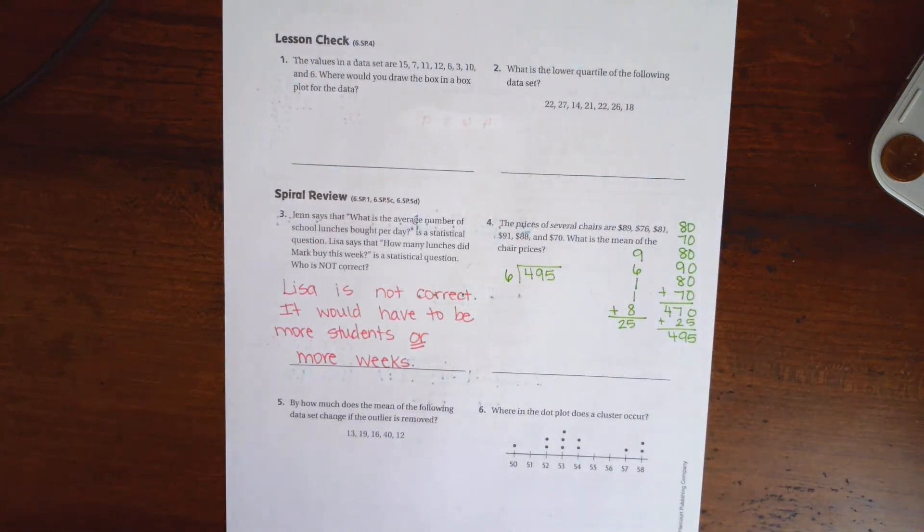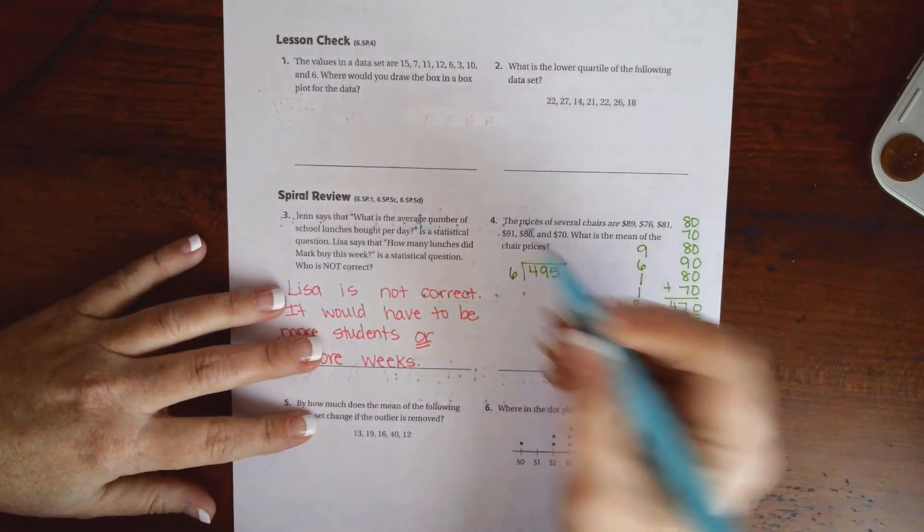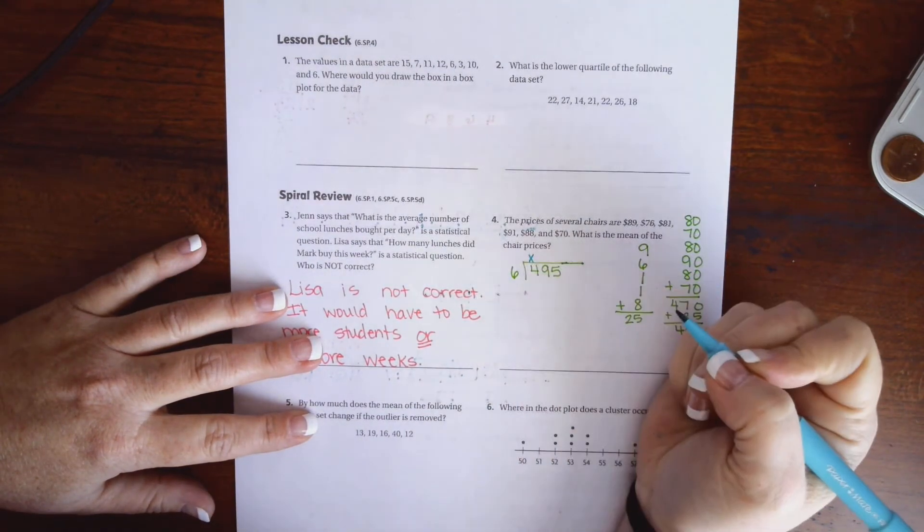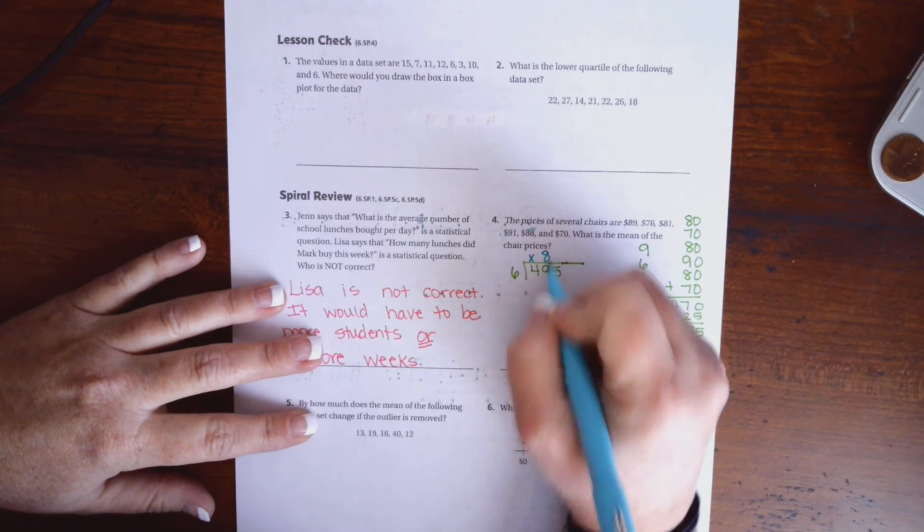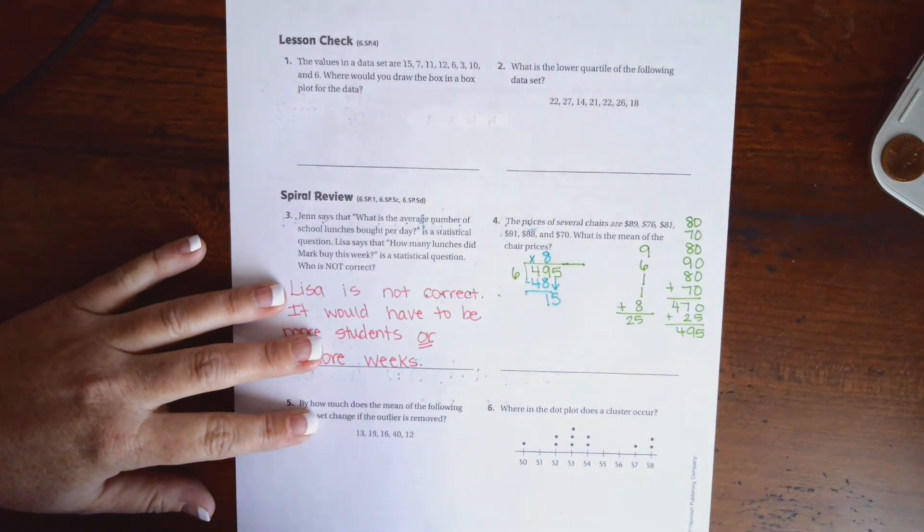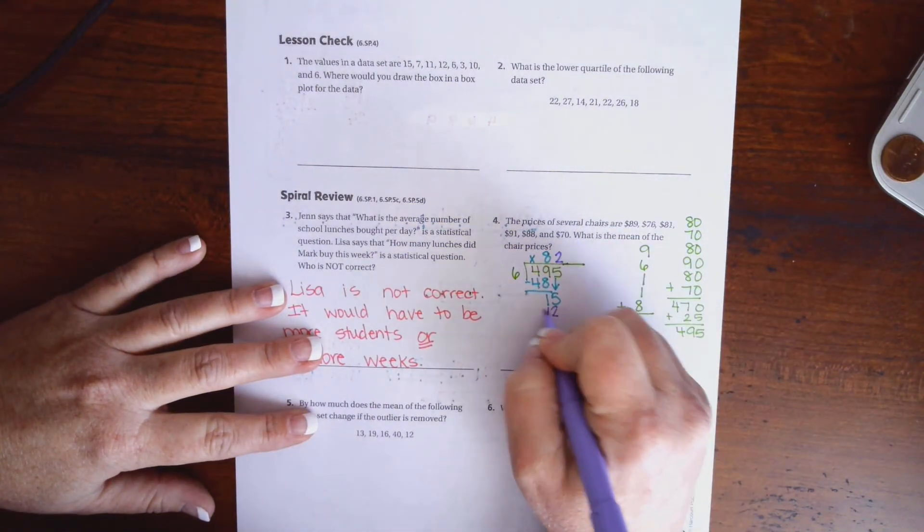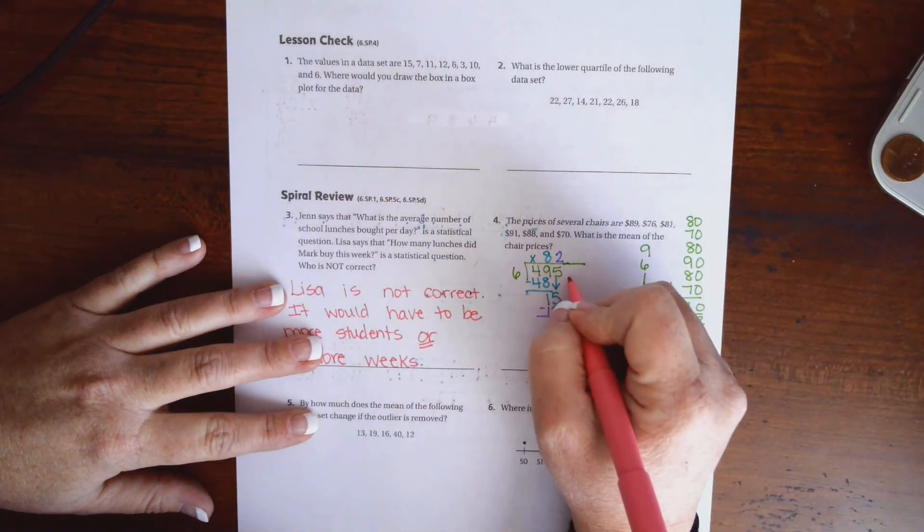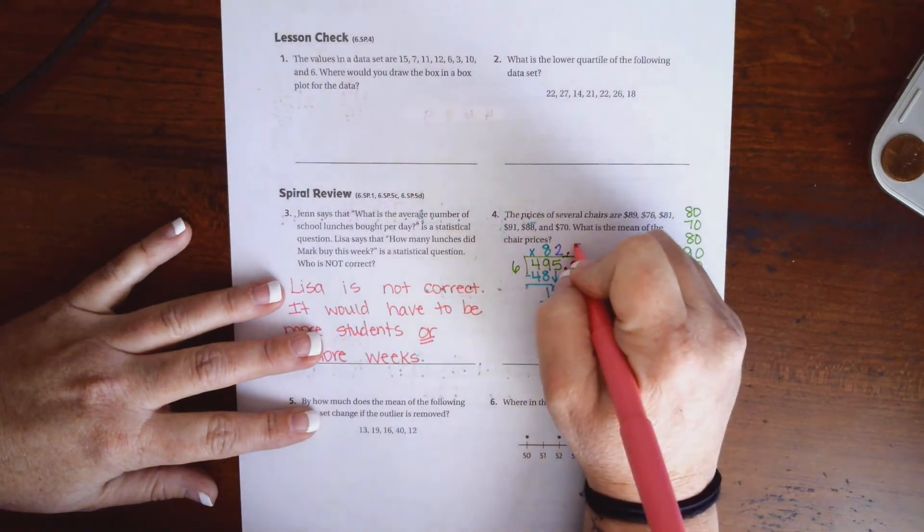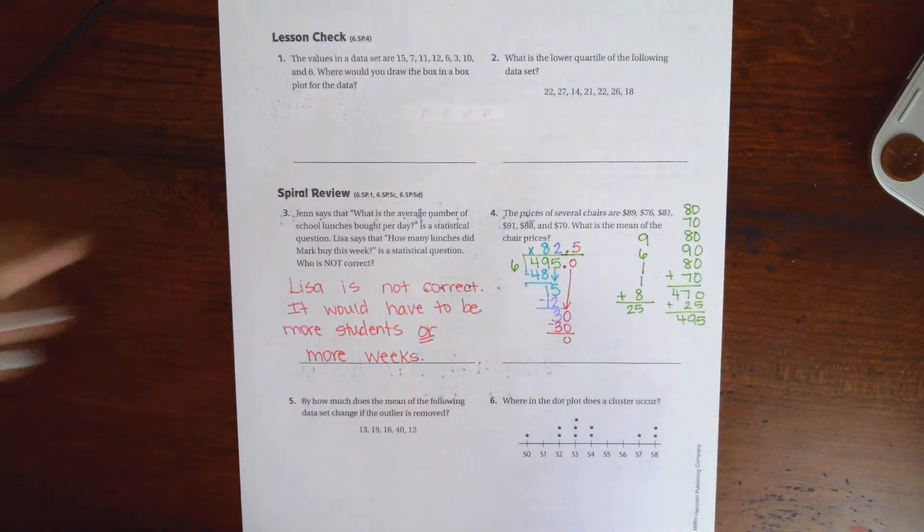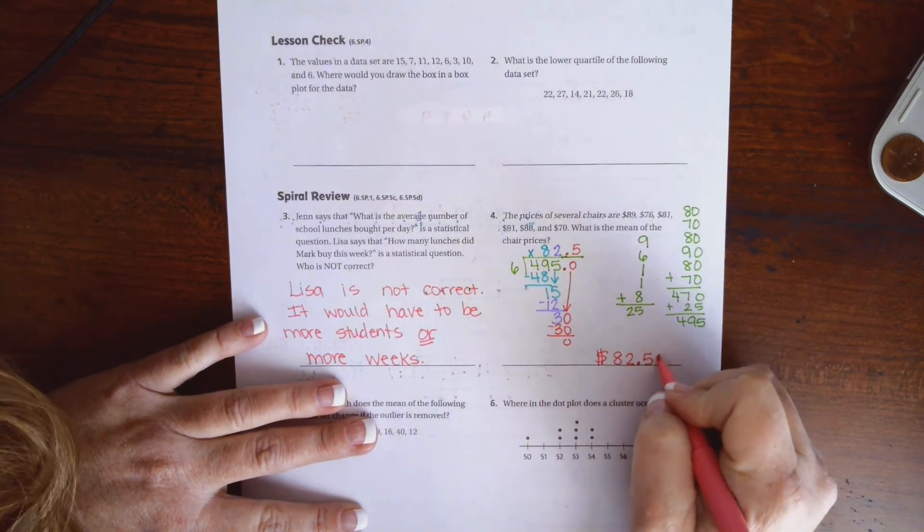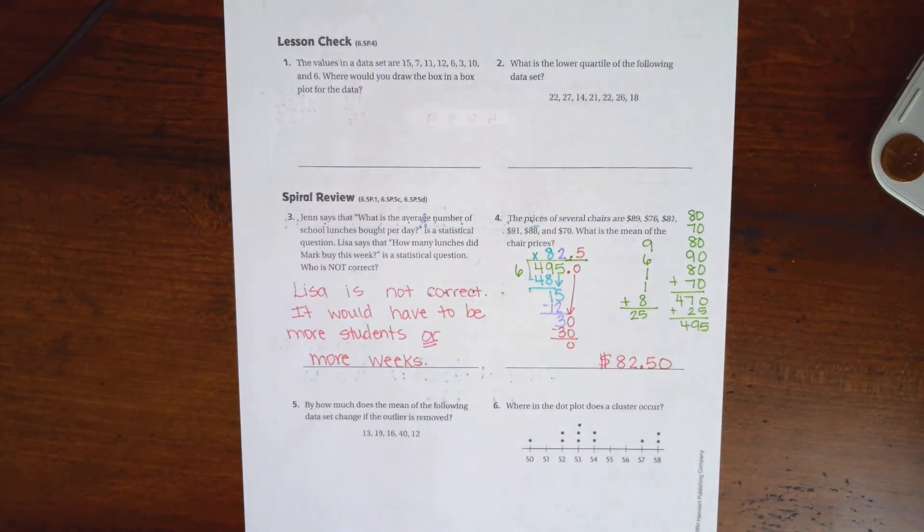6 is not going to 4. 6 is going to 49, 8 times, which is 48. So 8 times 48. I have 1 left over. I'm going to bring down my 5. 6 will go into 15 twice. 6 times 2 is 12. I have 3 left over. Now I don't have anything left, so I'm going to put a decimal and bring down. Now 6 will go into 30, 5 times. This is 30. But we're talking about money. Money doesn't end in the 10th place. So we just need to put a 0 on the end. So $82.50.